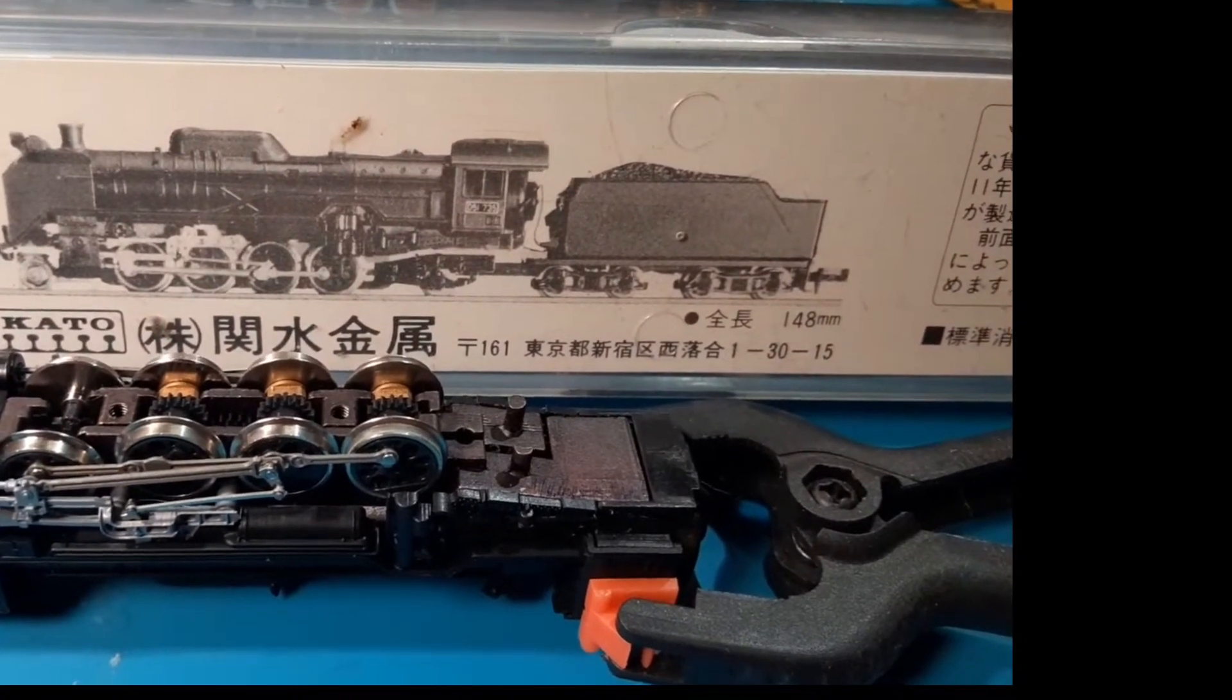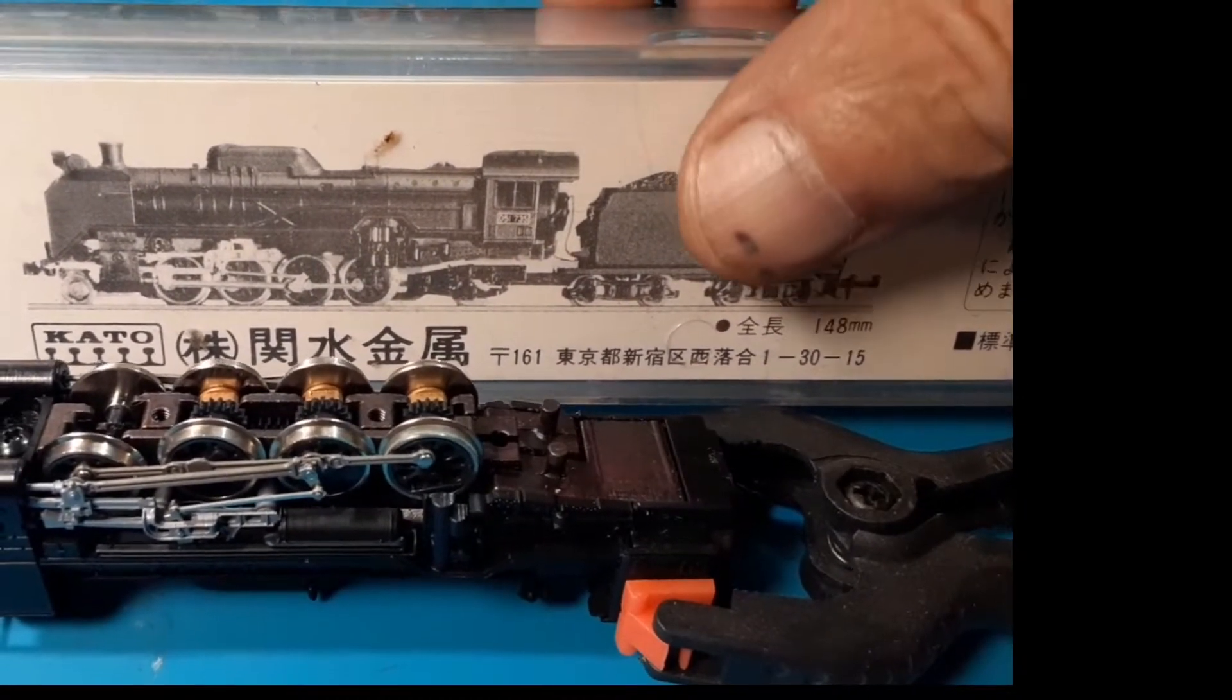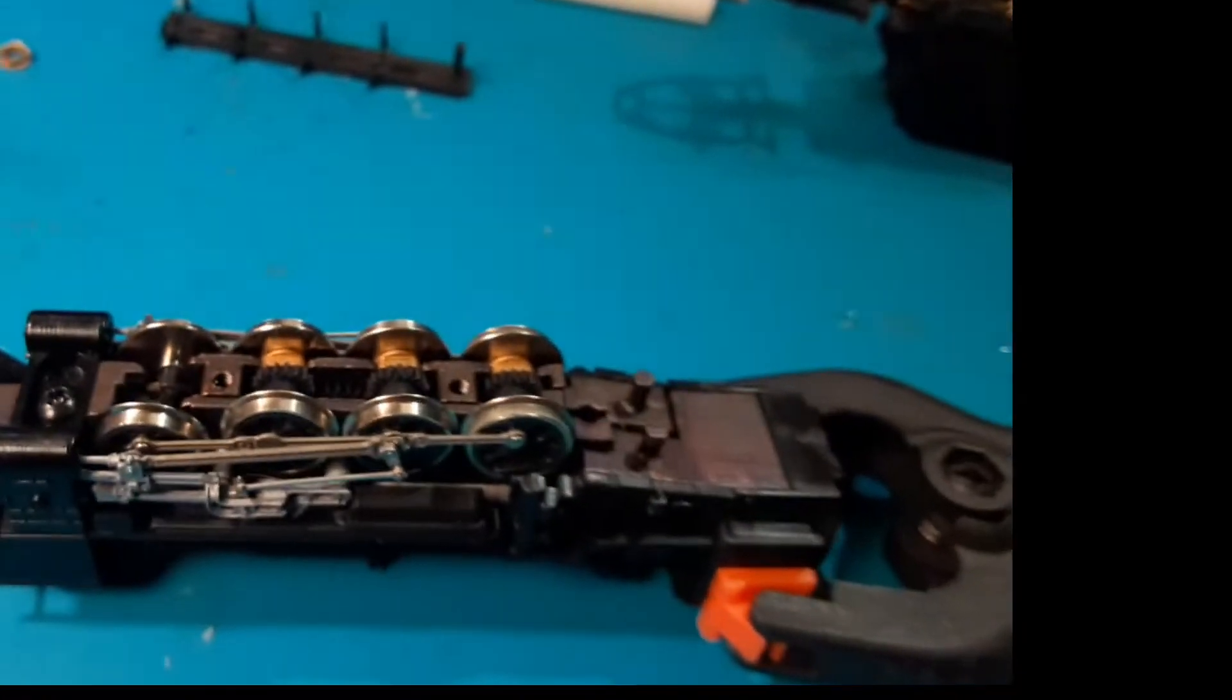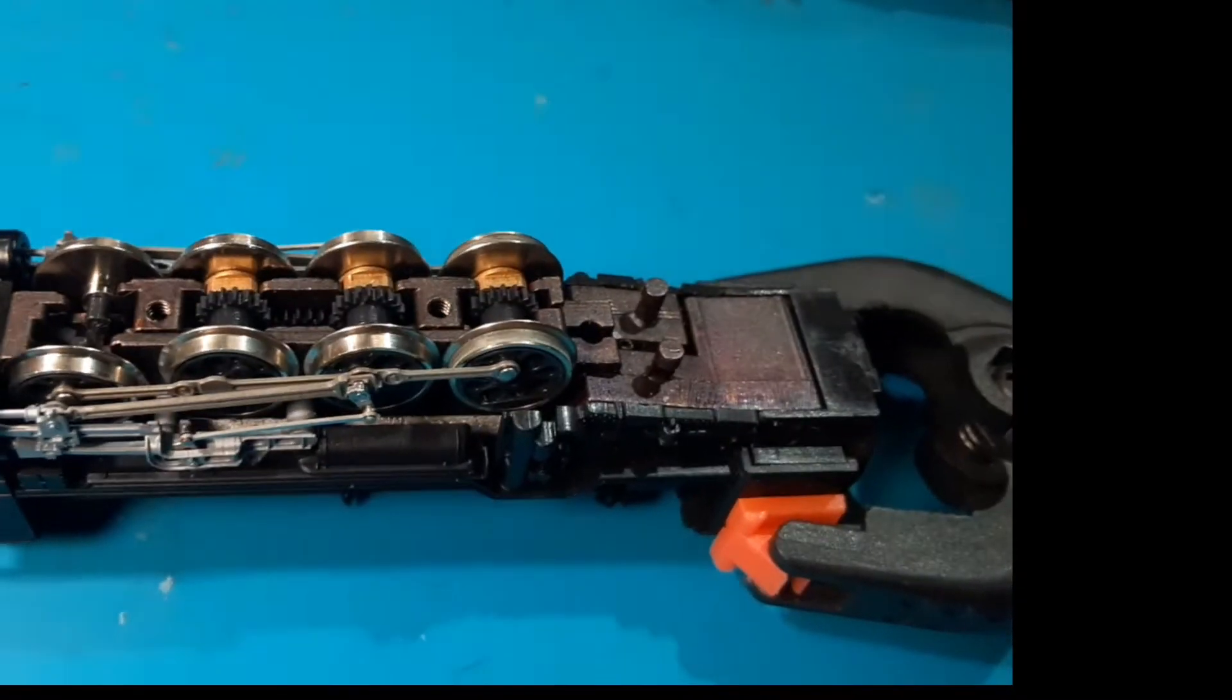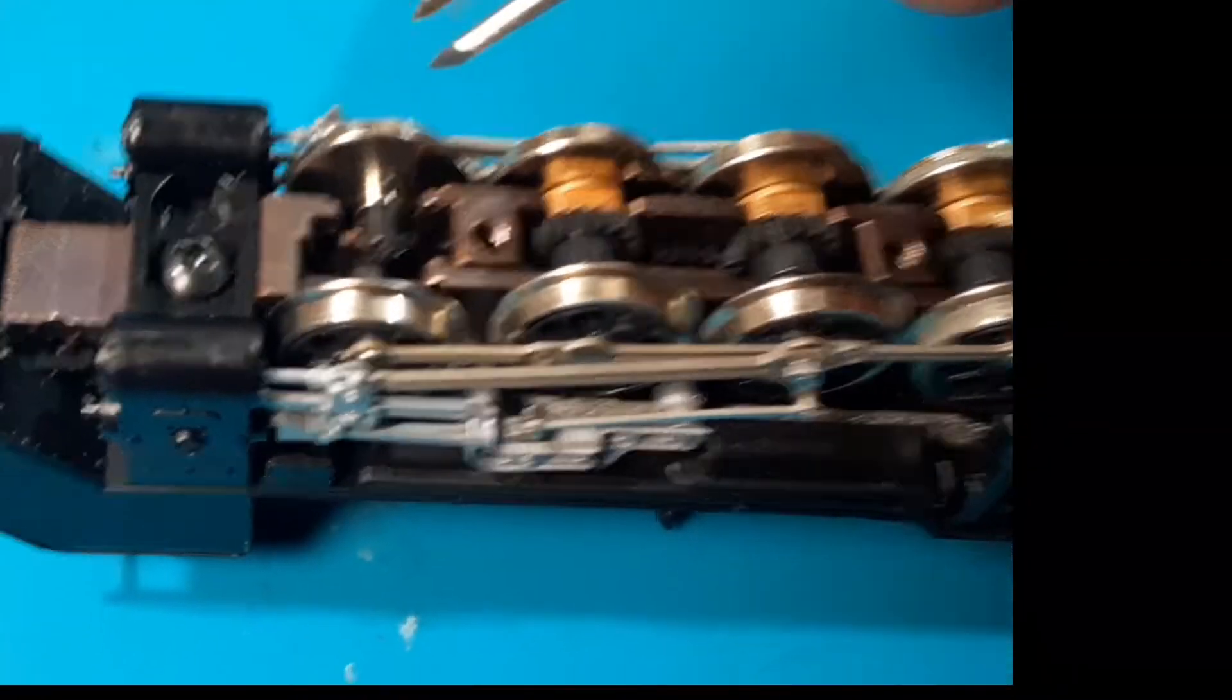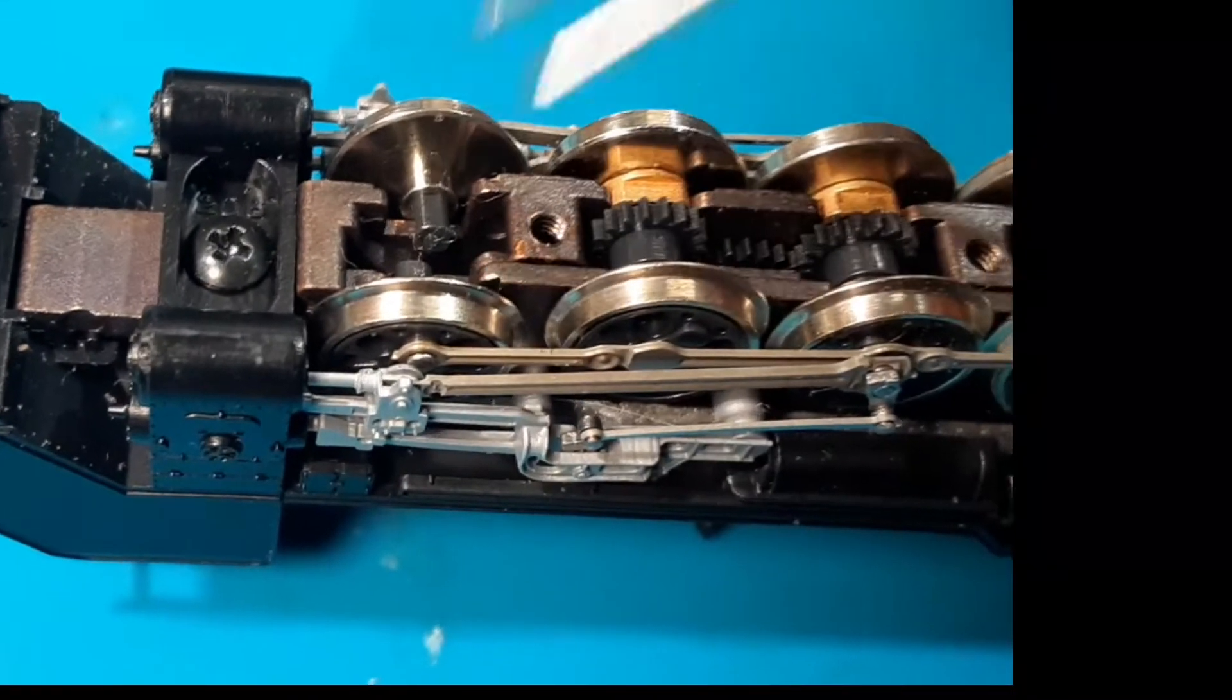Hi guys, doing a video today on N scale locomotive repair. Here we have a Kato 2006 or the D51, very nicely built locomotive. What failed on this one is the front axle - it had cracked and then the wheels fell off of it.